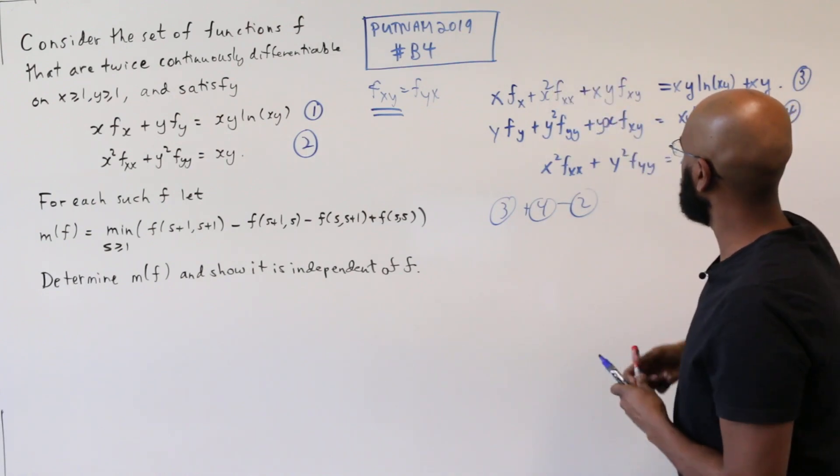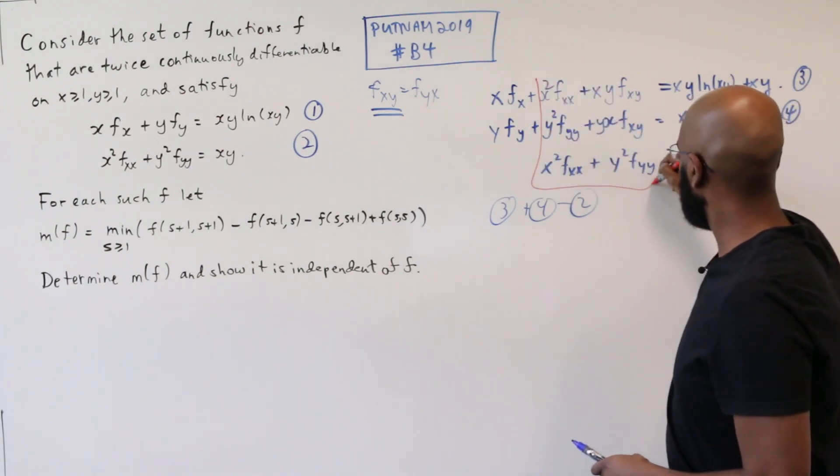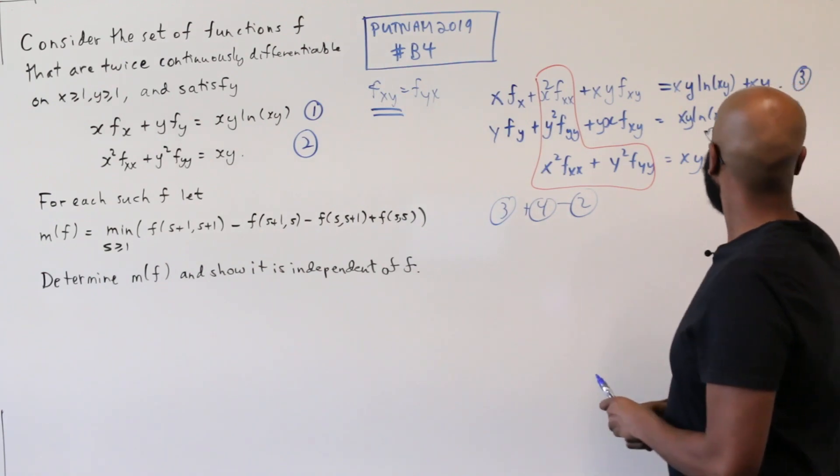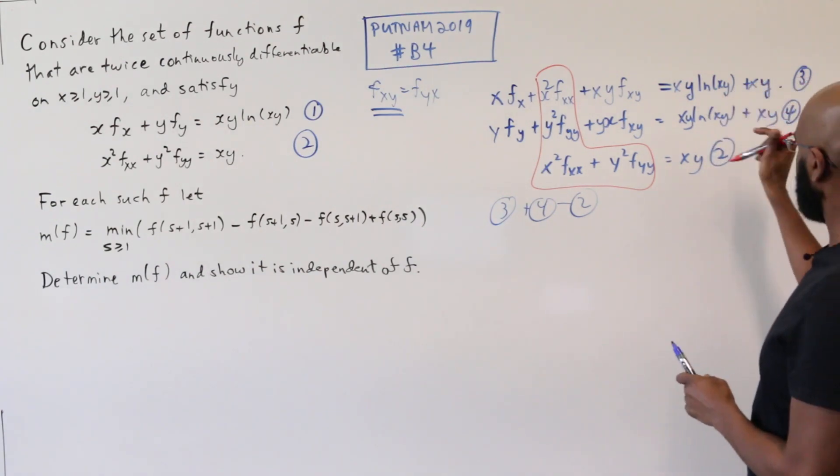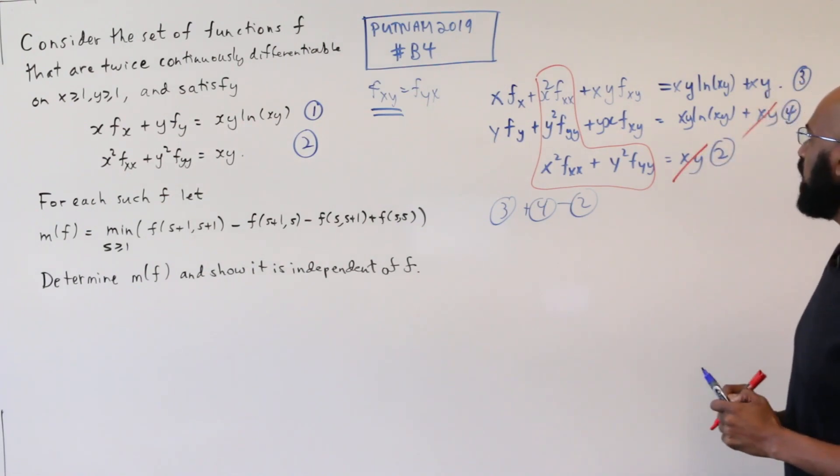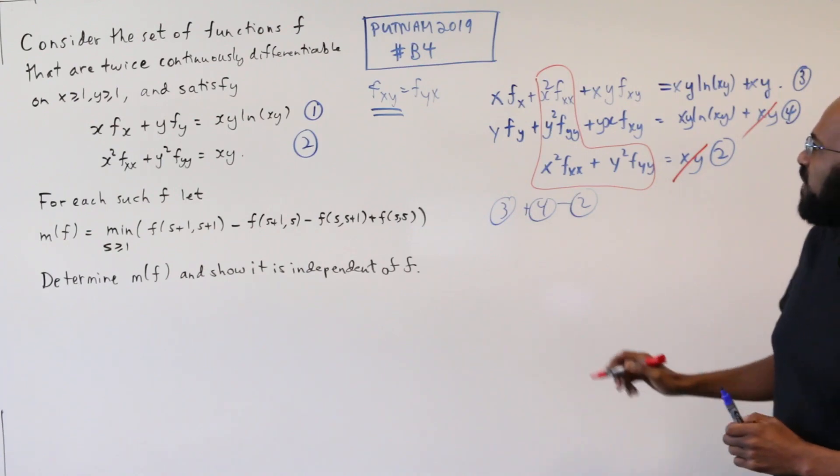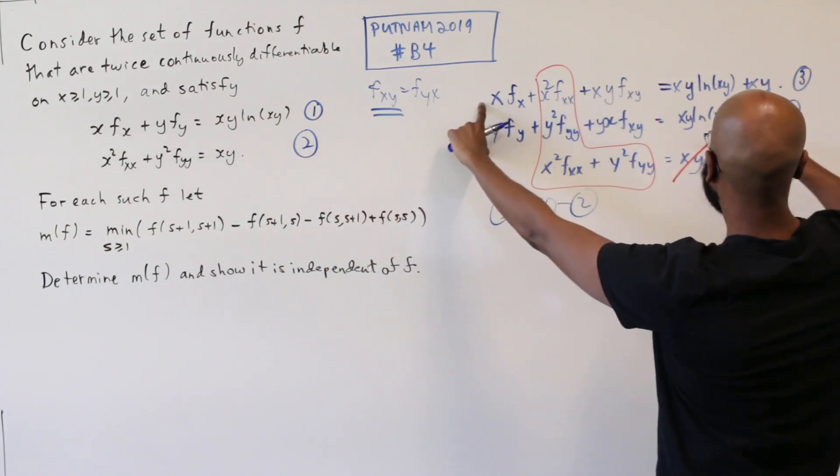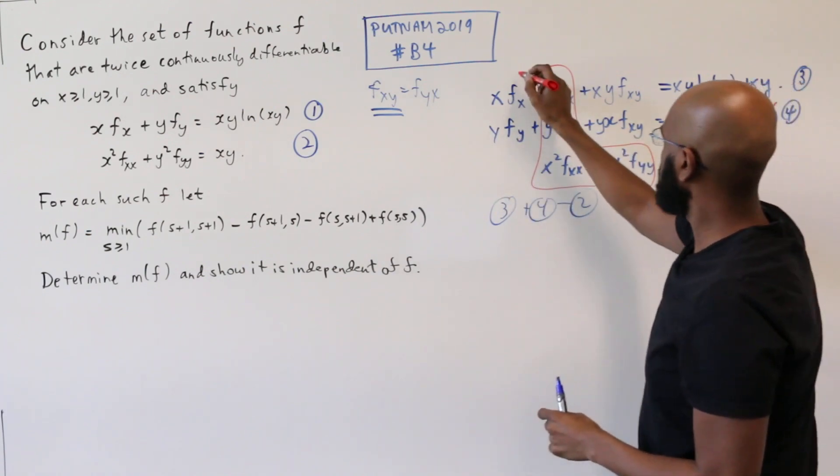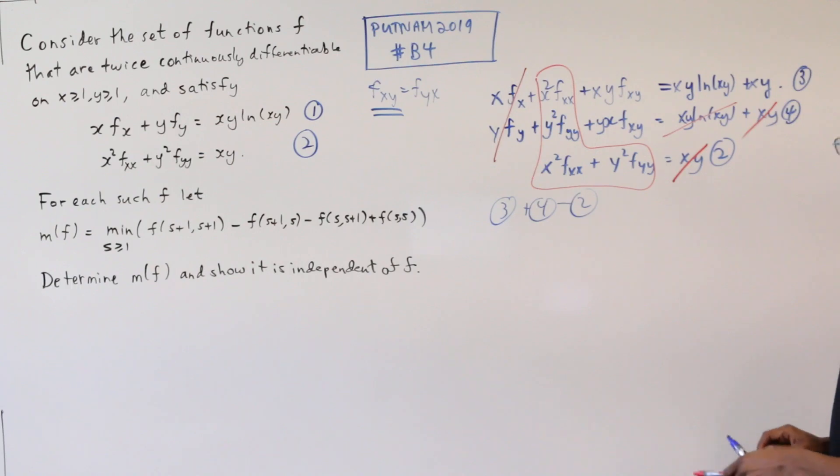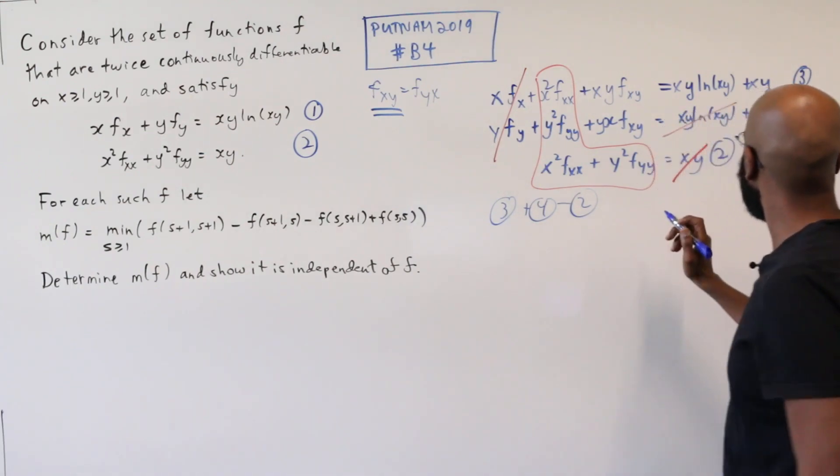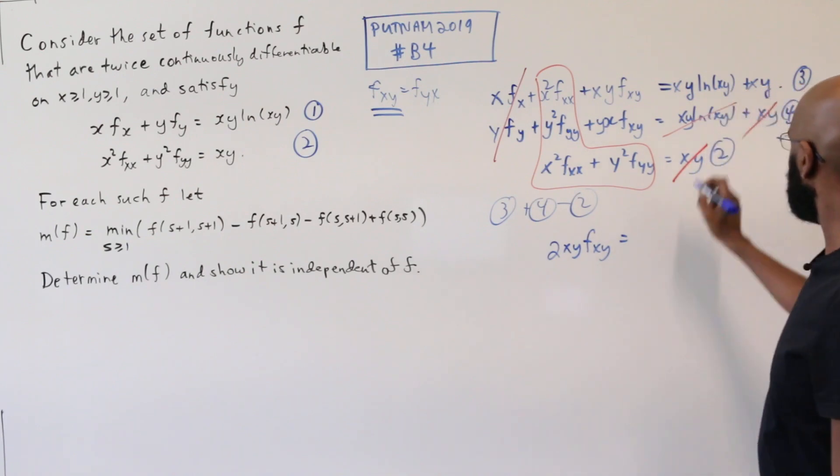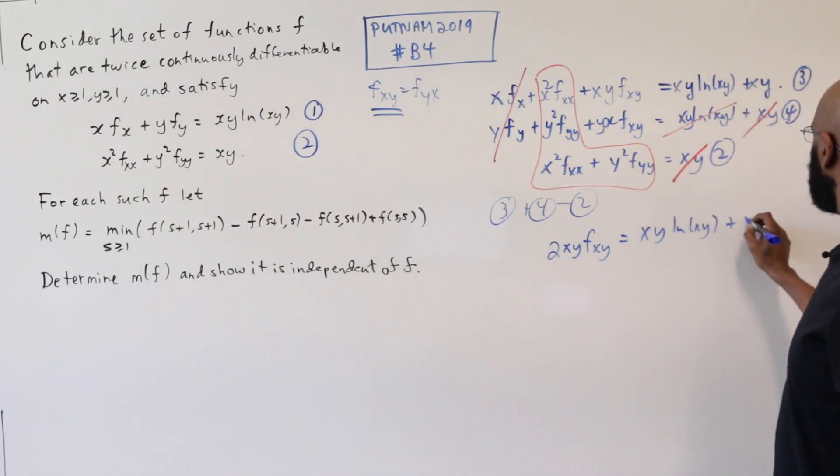All right, so first of all, these two contributions here match up with this contribution on the left from number 2. So all of this in red is gone. Okay, so secondly, the contribution of xy here is eliminated with one of the contributions of xy on the right-hand side here. And finally, when we add these two, we get x ln of xy. So the sum of these two is one of these contributions on the right over here. So we can eliminate these two if we eliminate one of these. Okay, so now if we simplify all of that, we get that 2xy fxy is xy ln(xy) plus xy.